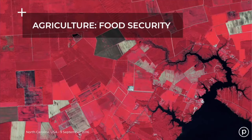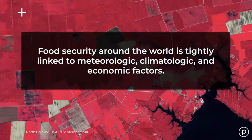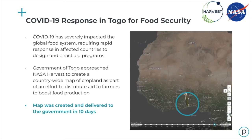Another big application area is agriculture, specifically food security, which is tightly linked to meteorologic, climatologic, and economic factors. COVID-19 severely impacted the global food system, requiring rapid response to design and enact aid programs. The government of Togo approached NASA Harvest — NASA's food security arm run out of the University of Maryland, led by Dr. Hannah Kerner — to create a country-wide map of cropland as part of an effort to distribute aid to farmers and boost food production. Harvest amazingly created and delivered this map to the government in just 10 days.